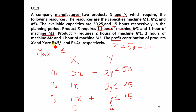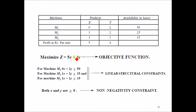The profit contribution is 5X + 4Y. The objective function is Z = 5X + 4Y. For machine M1: 0X + 2Y ≤ 50. For machine M2: 1X + 2Y ≤ 25. For machine M3: 1X + 1Y ≤ 15. We also write the non-negativity constraint: X, Y ≥ 0.